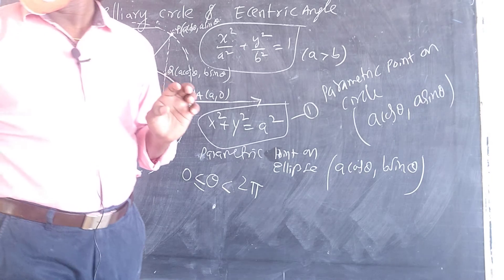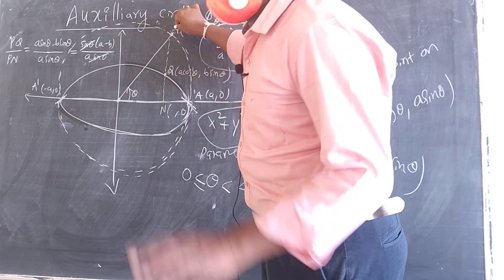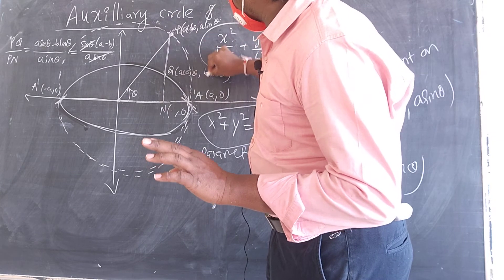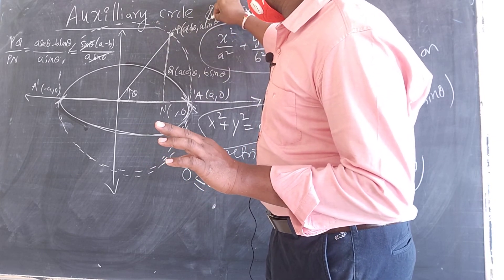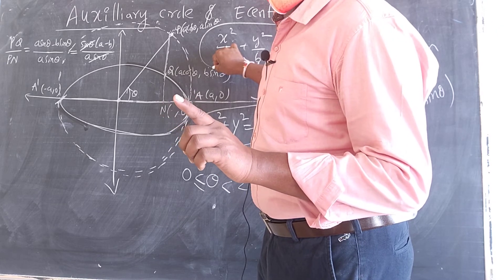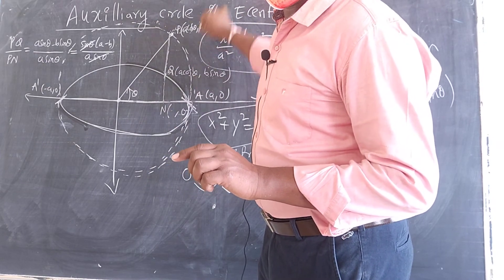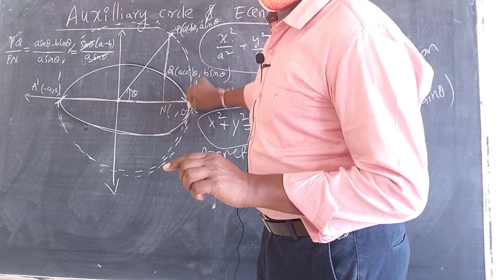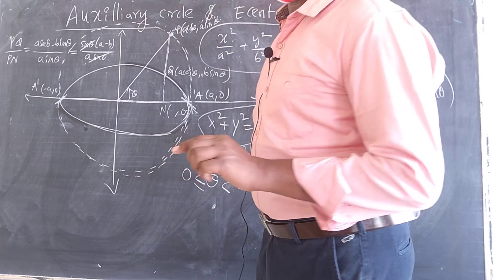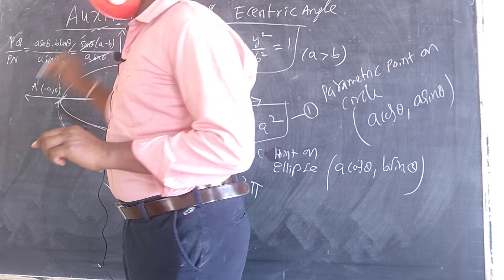So the ratio PQ/PN = (a − b)/a. To verify: PQ = a sinθ − b sinθ, and PN = a sinθ. Taking sinθ common in the numerator: sinθ(a − b) divided by a sinθ. The sinθ cancels, giving (a − b)/a.